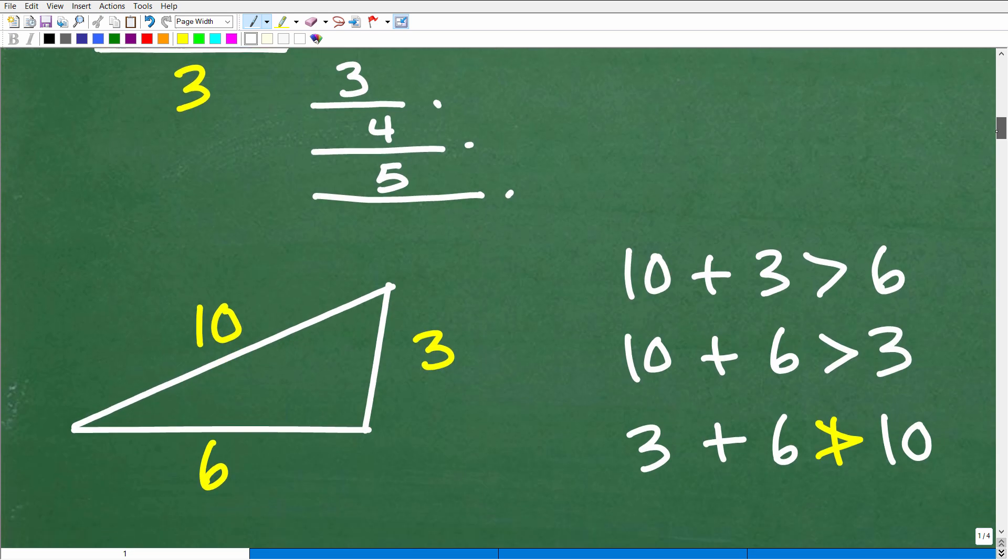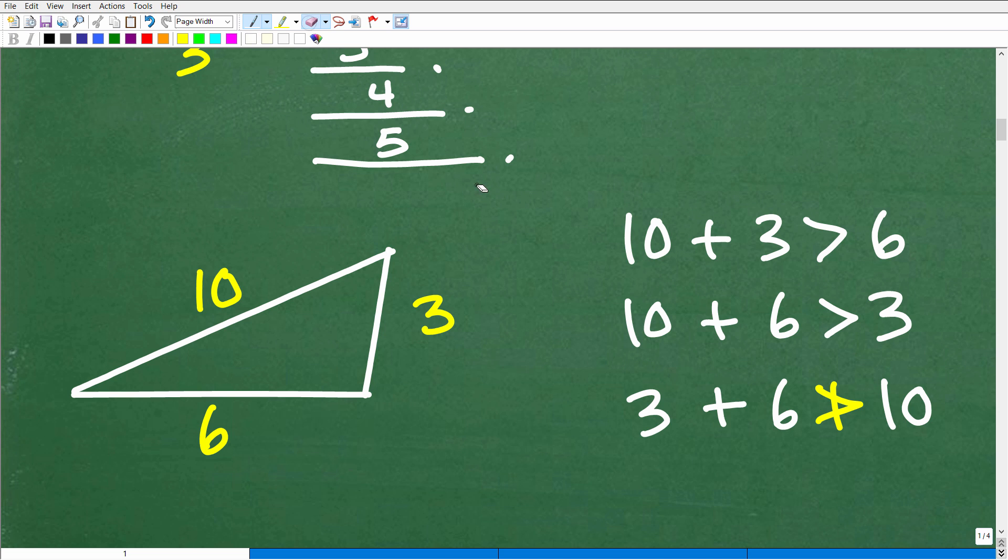So let's go ahead and take a look at the triangle in question, and this is how we can kind of prove or disprove whether in fact you can form a triangle with sides 3, 6, and 10. So let's go ahead and just check each side. Is 10 plus 3 greater than 6? Well yes it is. 10 plus 3, that's 13, that's greater than 6, so that checks out.